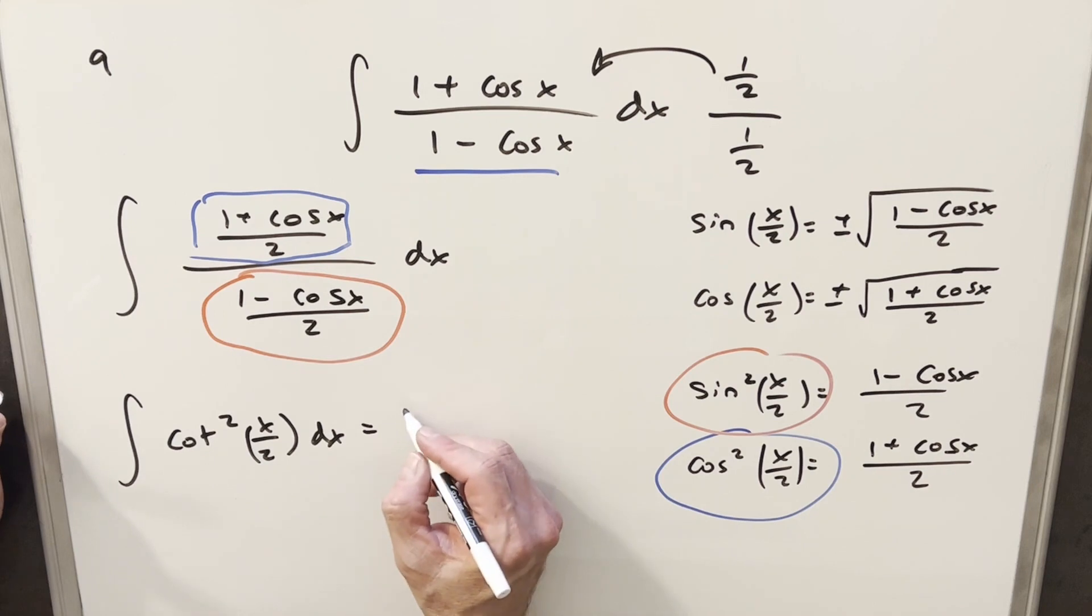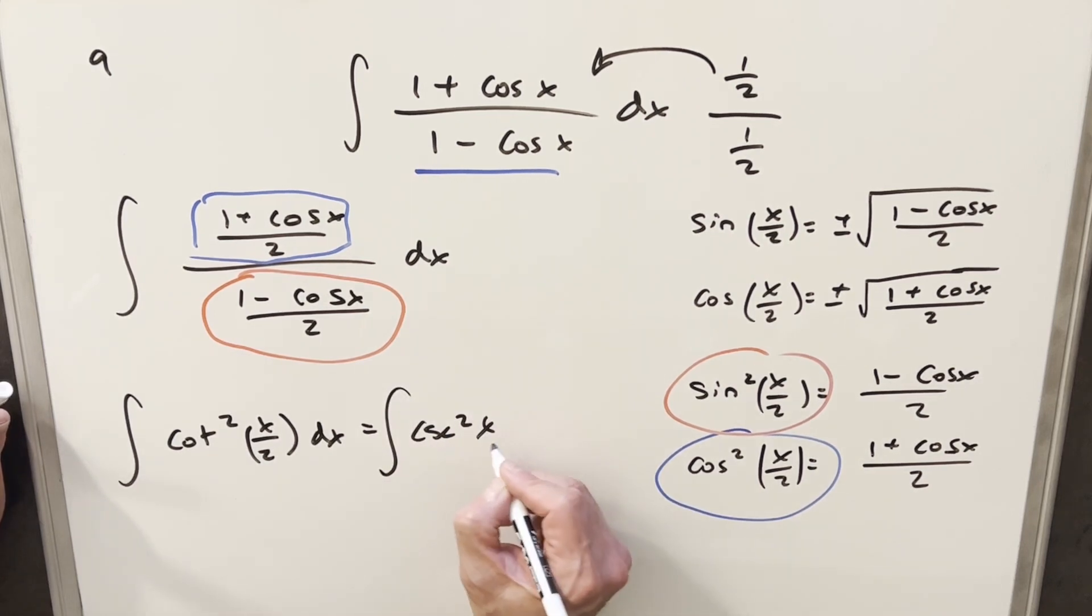But then from here, what I'm going to do is use the identity on cotangent squared. And I can actually write that as cosecant squared of x over 2 minus 1.